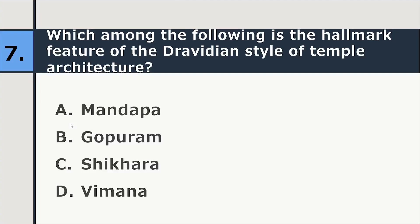Which among the following is the hallmark feature of the Dravidian style of temple architecture? Mandapa, Gopuram, Shikhara or Vimana? So correct answer is Vimana.